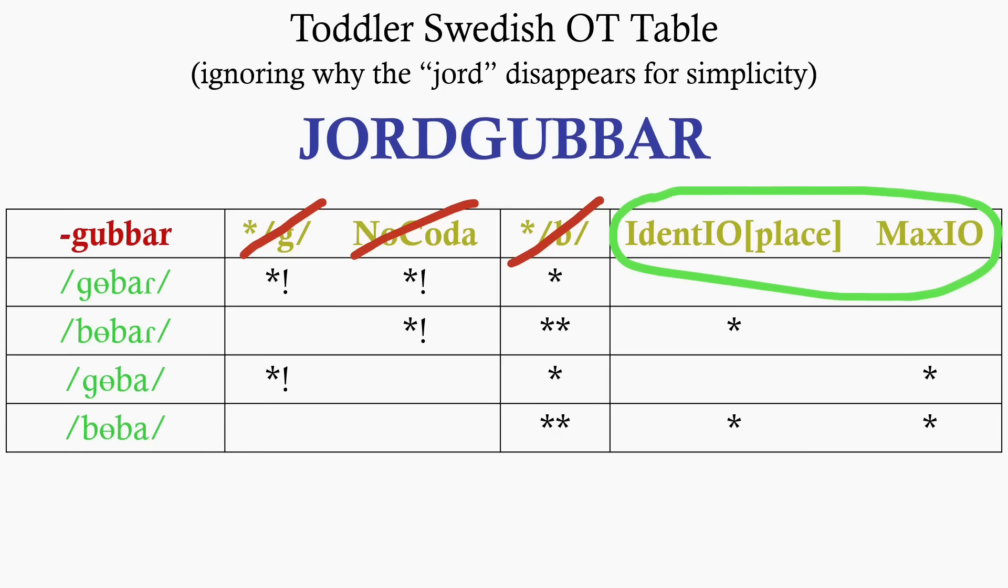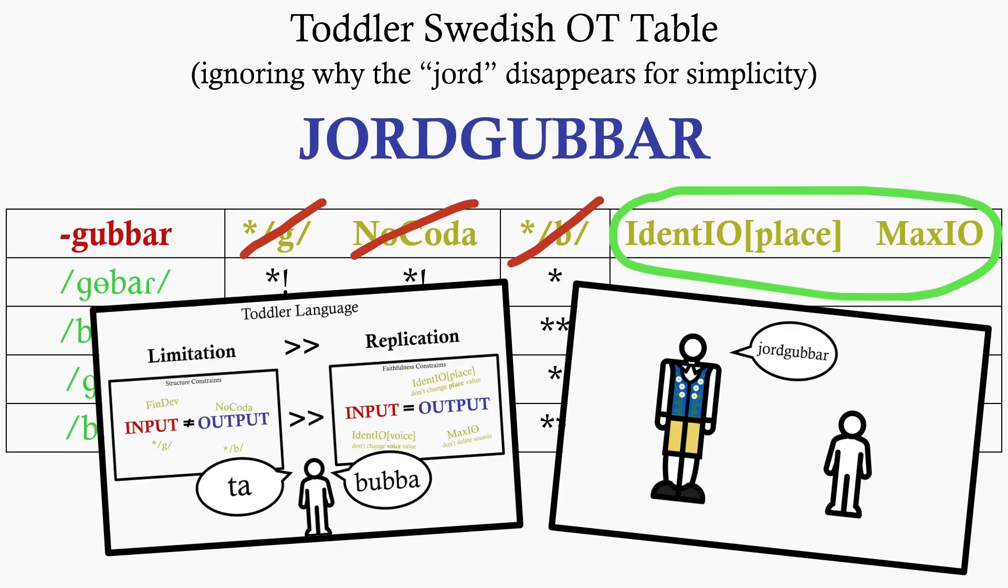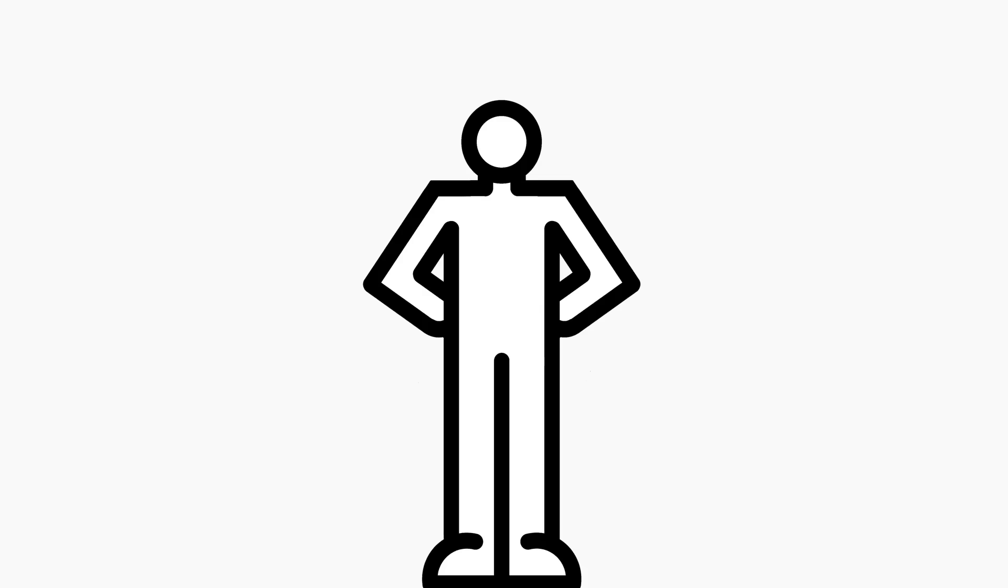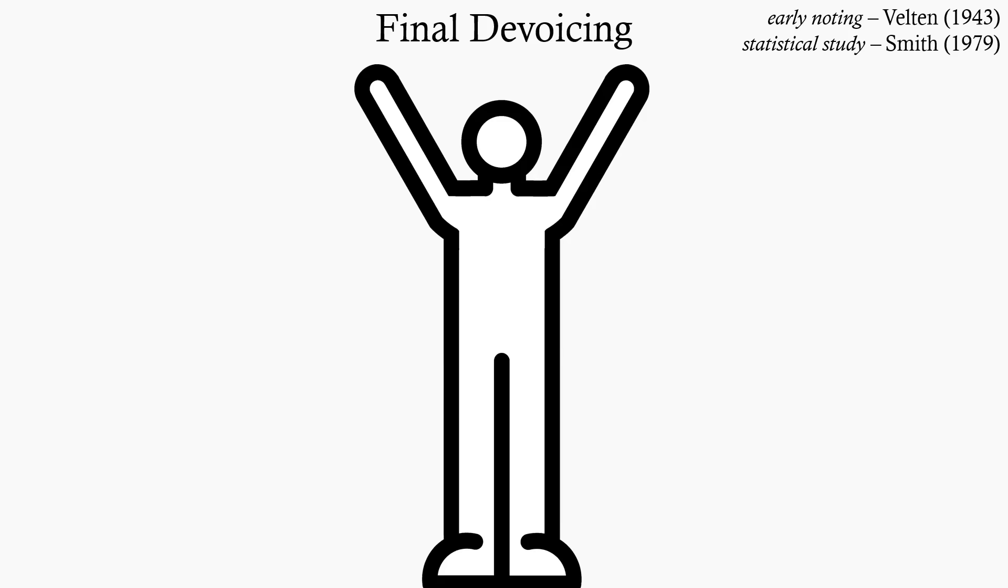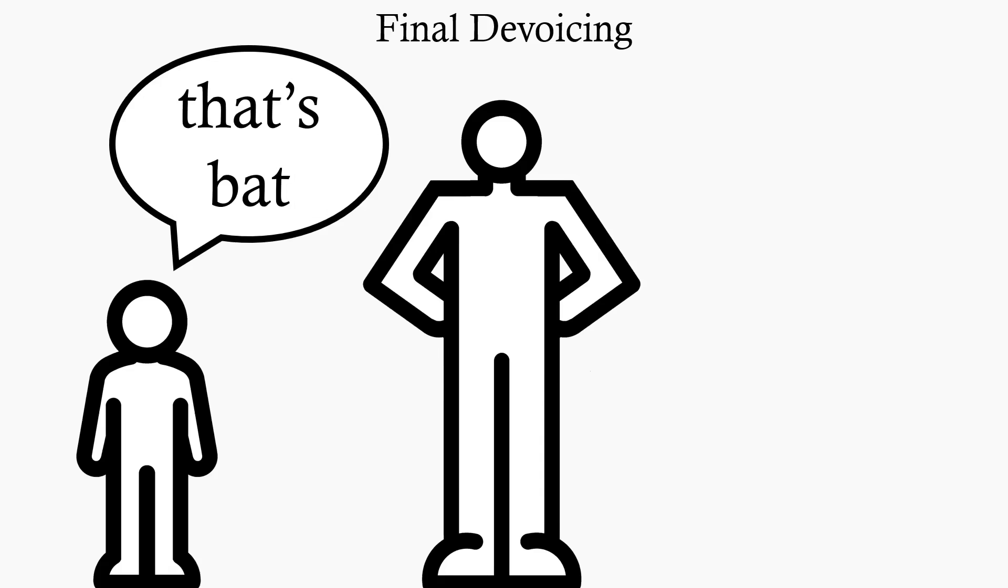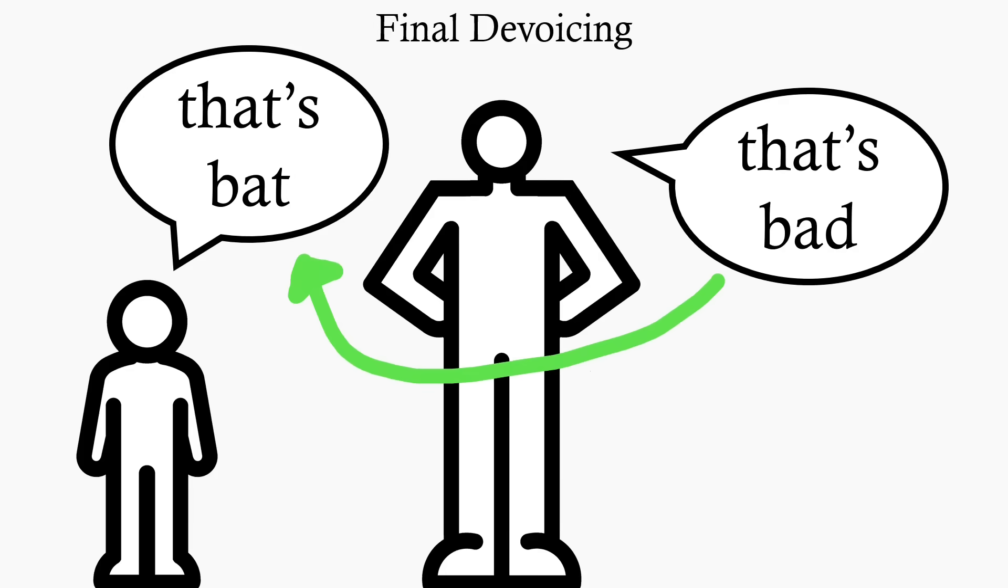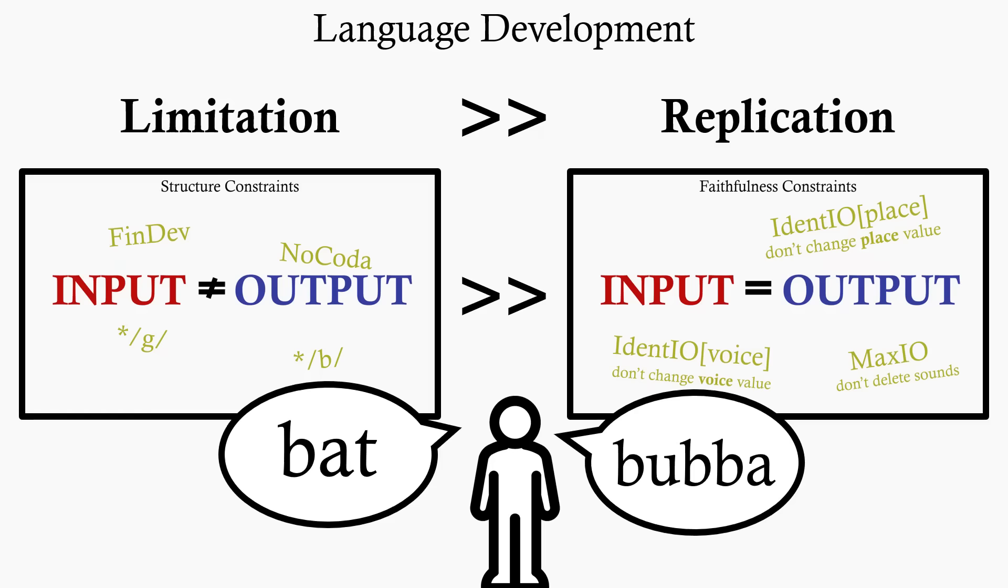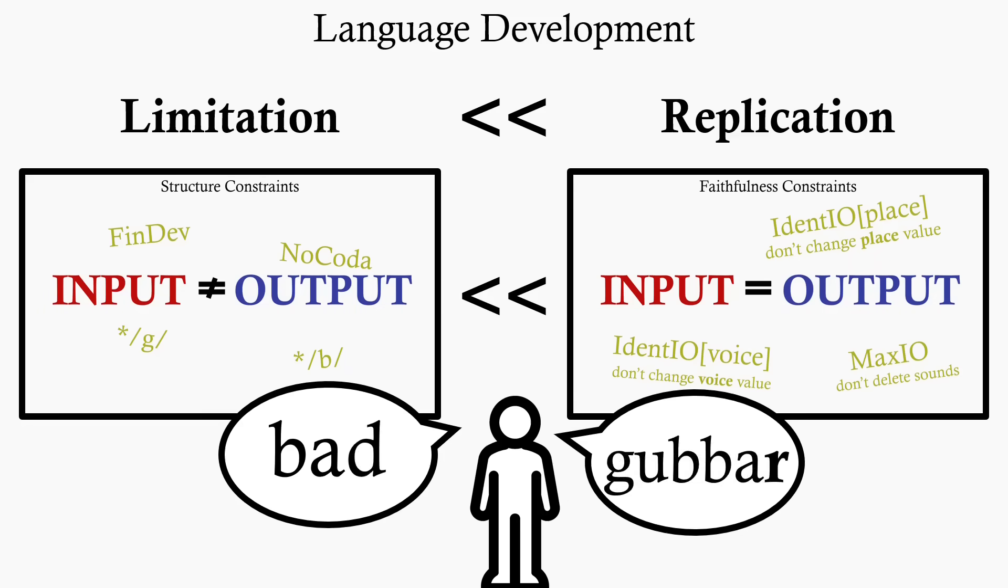And do you know what many toddlers do as they learn English? They de-voice their final consonants! They say that's bat instead of that's bad. But through the constant stream of correct data from the language around them, they learn to rank the faithfulness constraints higher than the structure constraints, and the children start saying all the phonemes of their language. They say voiced consonants at the end of words, they stop throwing out the final consonants of syllables.